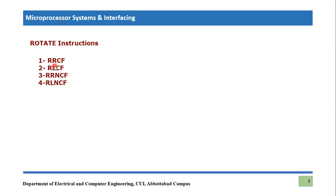RRCF is rotate right, and RLCF is rotate left. RR means rotate right and RL means rotate left. There are two instructions for rotating towards left and two instructions for rotating towards right. CF means carry flag. If you remember the status register we covered, there were five flags available in the PIC18F status register: carry flag, digital carry flag, parity flag, negative flag, zero flag, sign flag, and overflow flag. Right now we are just considering carry flag.